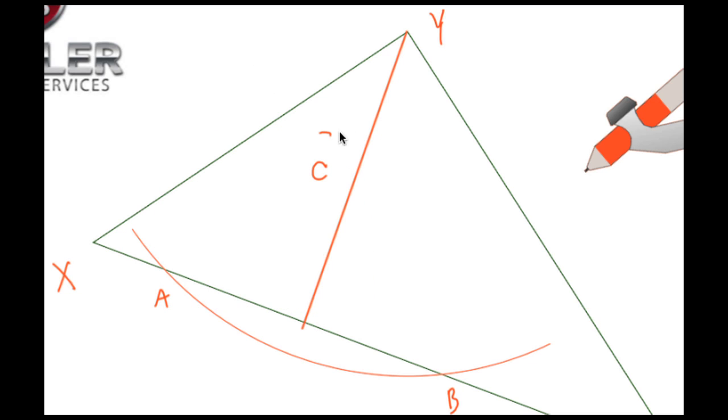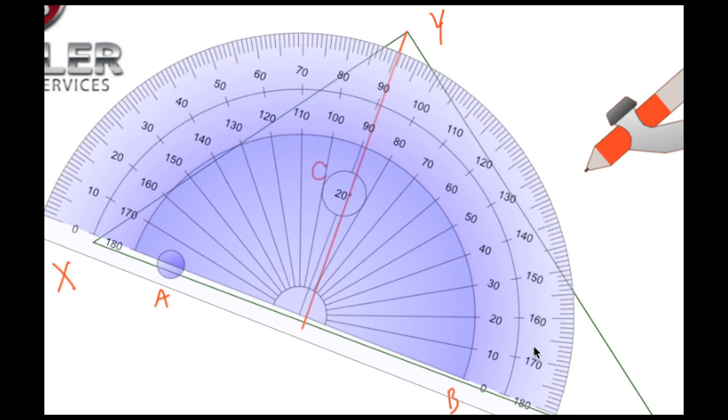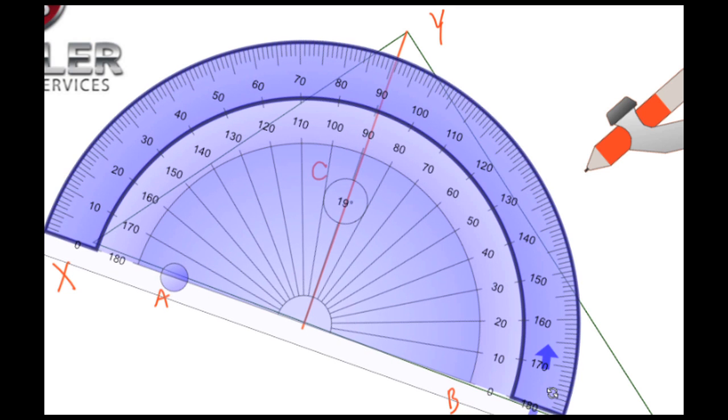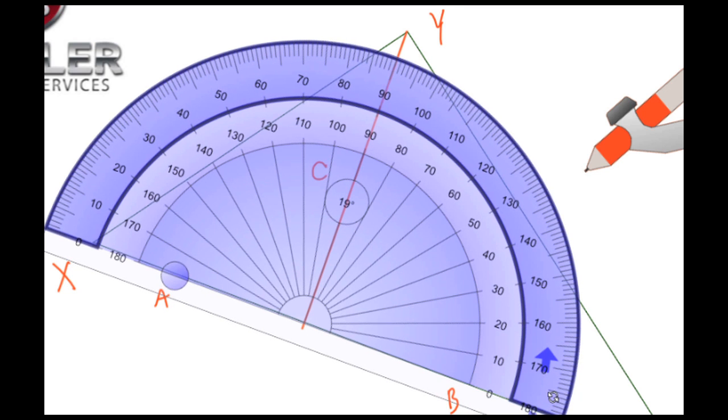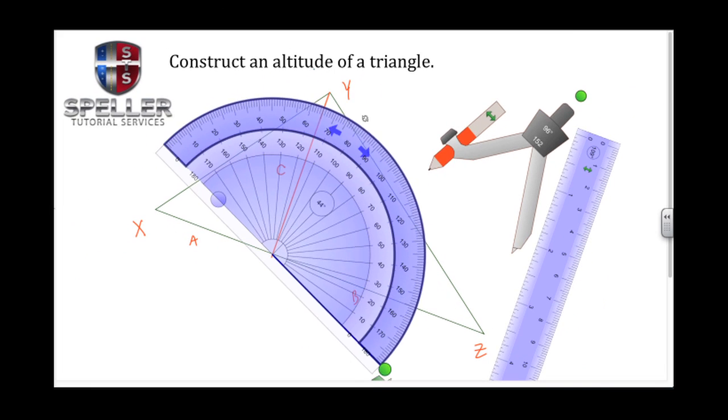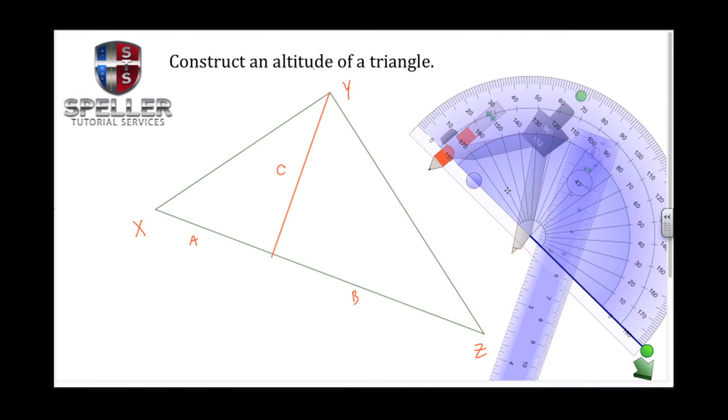We're going to do a quick measurement to make sure that this angle is in fact 90 degrees. Let's pull out our protractor tool, place it on the vertex, and then rotate around. Here we are at zero degrees, and we see that here we are at 90 degrees. So this altitude does in fact create a 90-degree angle with the opposite side as it touches vertex Y.